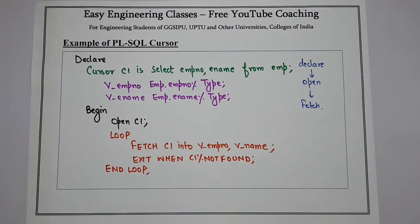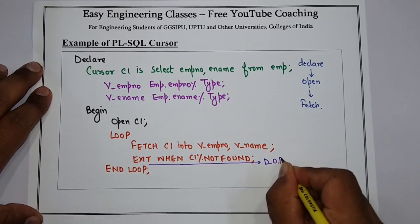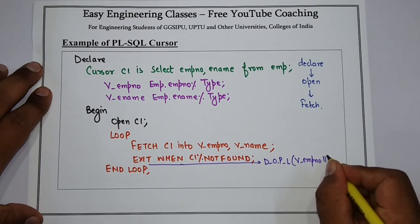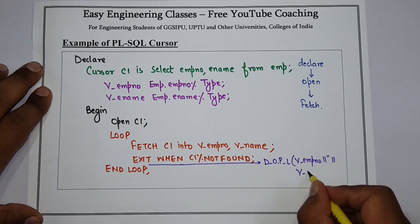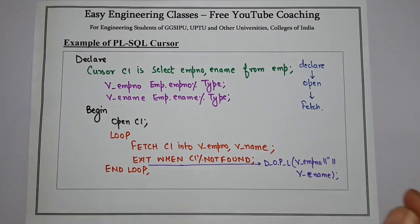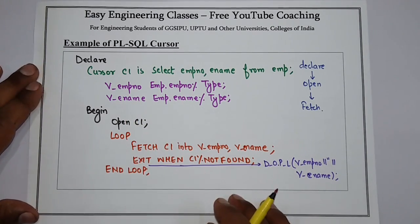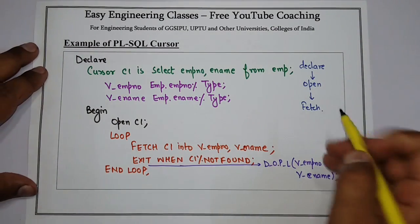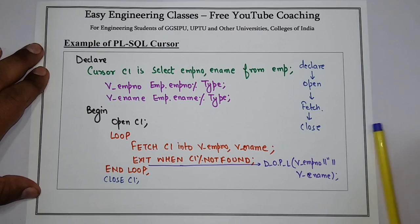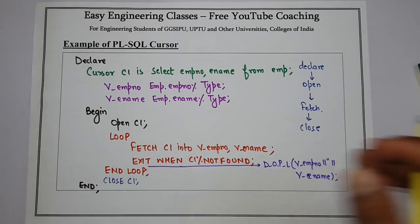Inside the loop, we can also print values using: DBMS_OUTPUT.PUT_LINE(v_employee_number || v_name). This prints the employee number and employee name for each row. After the loop, fetching is done and we write CLOSE C1, then END. This is a simple example of a PL/SQL cursor.